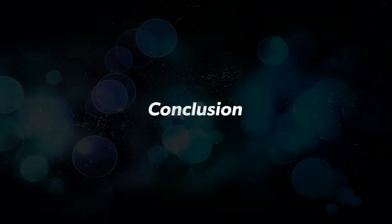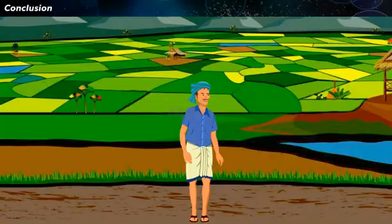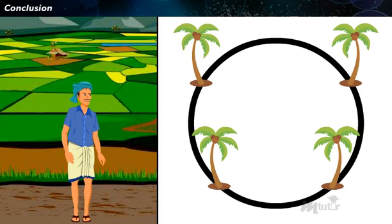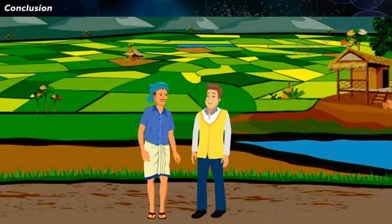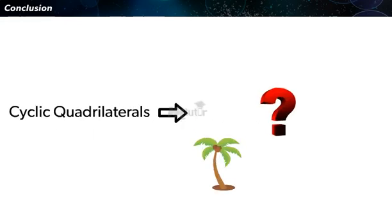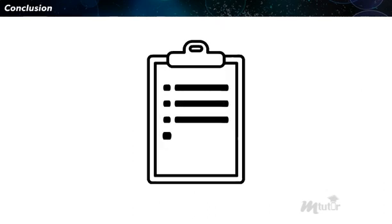Hope this makes you clear about the angle subtended by an arc of a circle. Consider the situation that a farmer wanted to plant four coconut trees such that they are concyclic in a large piece of land without actually drawing a circle. As the piece of land is very huge, drawing a circle would be a waste of time, so he contacts an engineer who guides him. In the upcoming lesson on cyclic quadrilaterals, we shall see how the engineer guided the farmer to plant the four trees in a circular fashion without actually drawing a circle. Before moving on to the next lesson, let's summarize what we have learned.